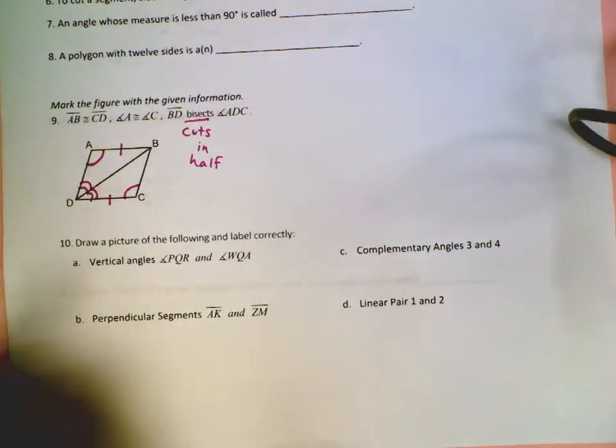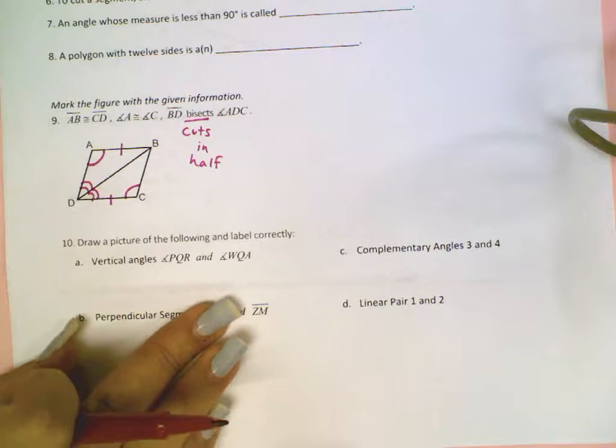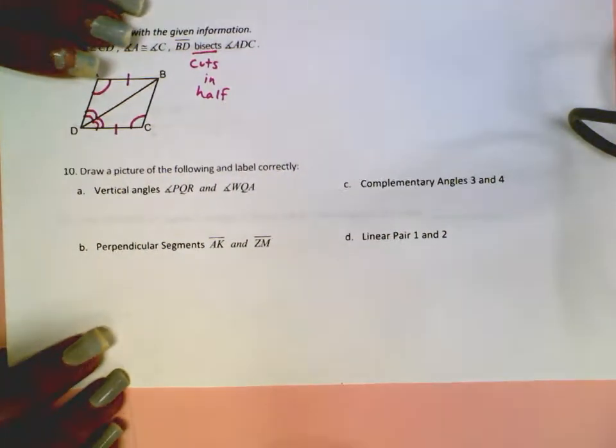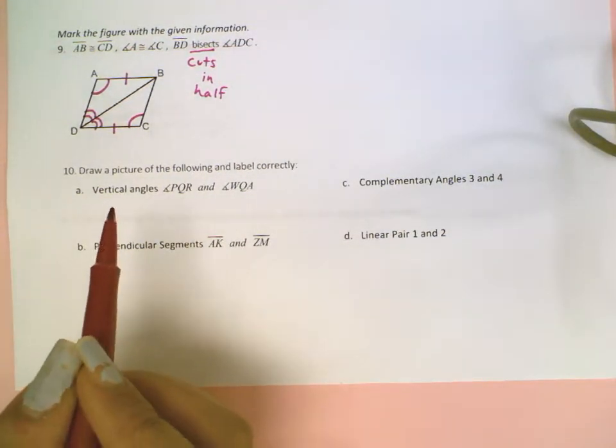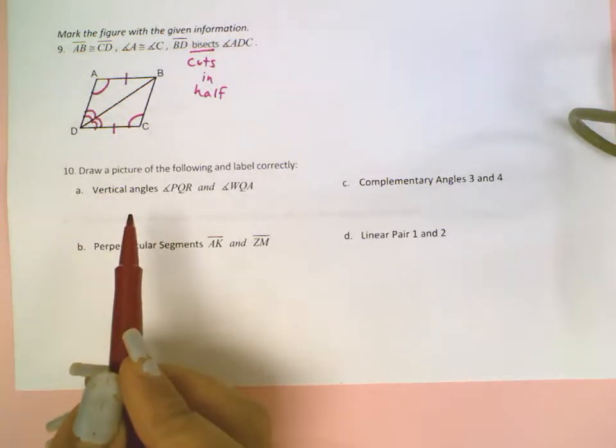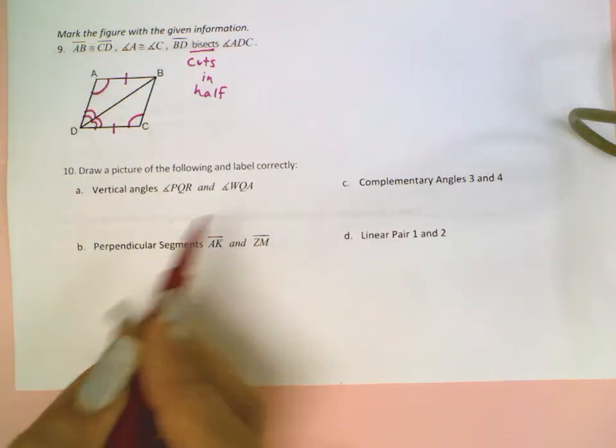Now if I move on to number 10, it tells me to draw the picture with the following and label it correctly. If it tells me vertical angles, I know that vertical angles exist when we have two lines that intersect.